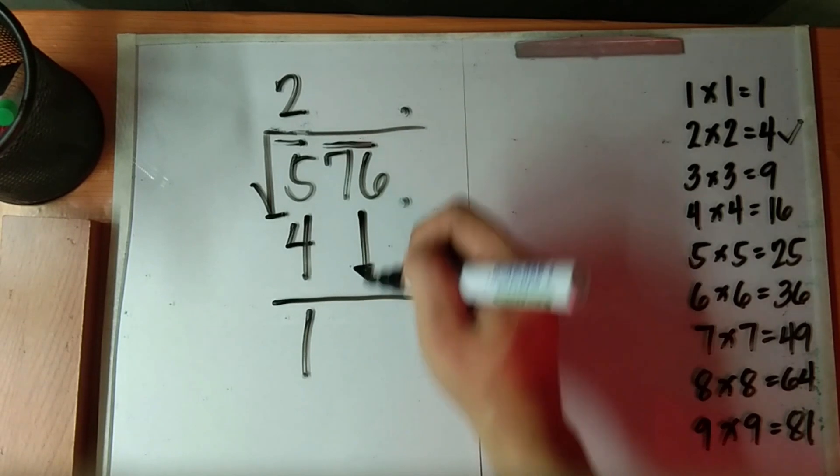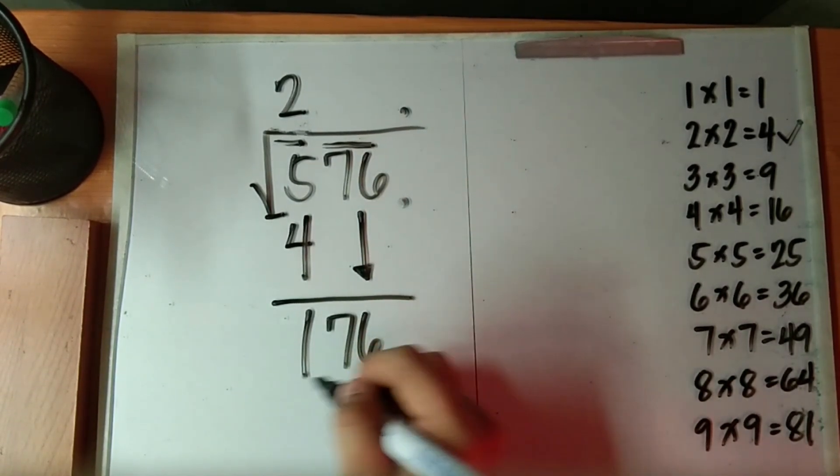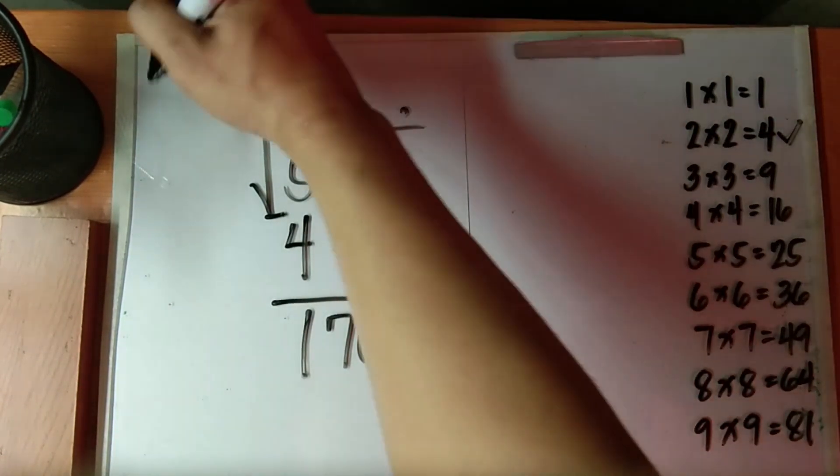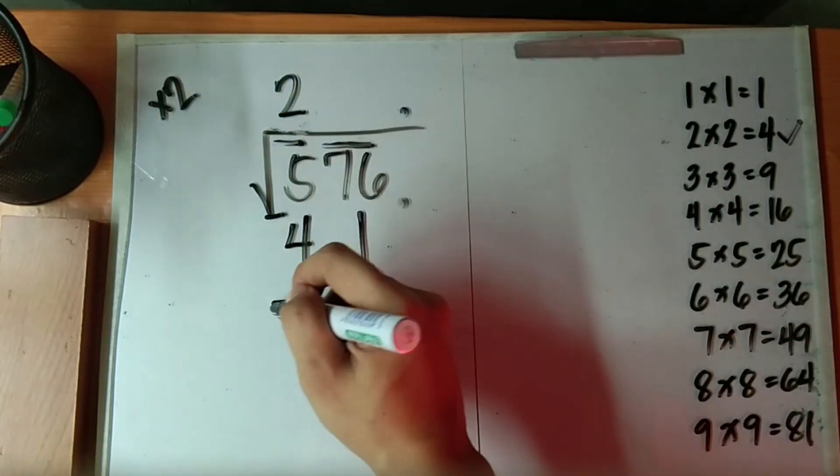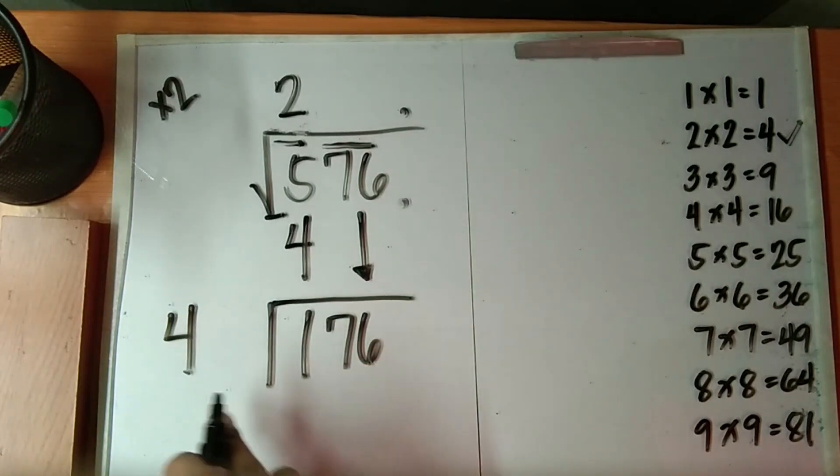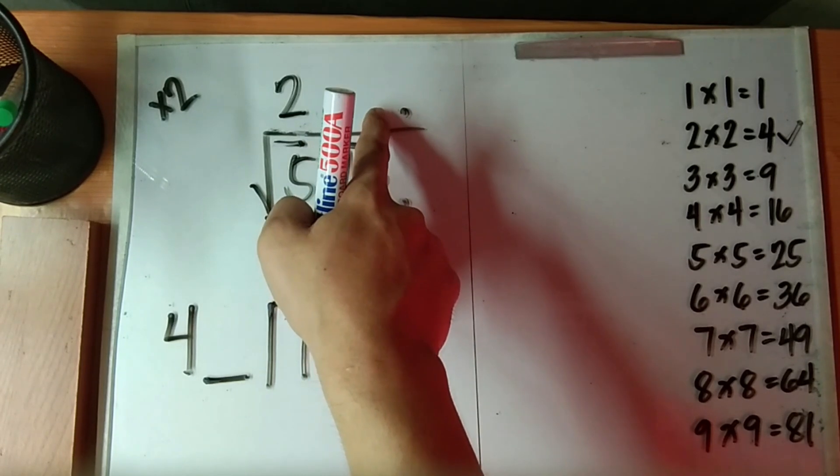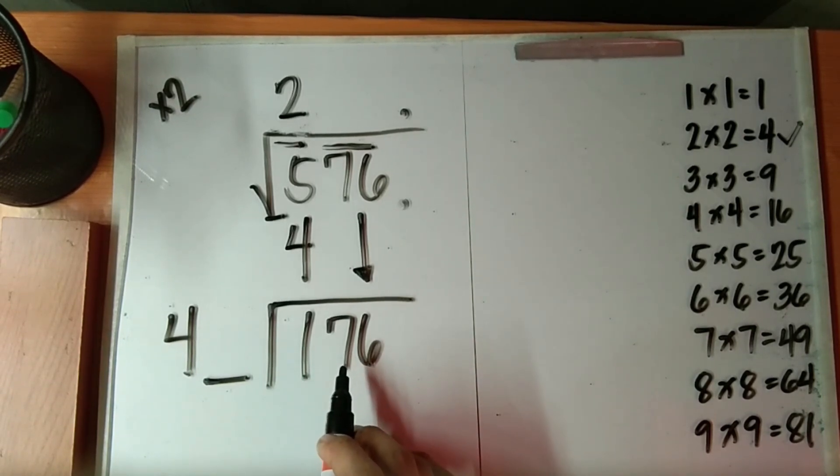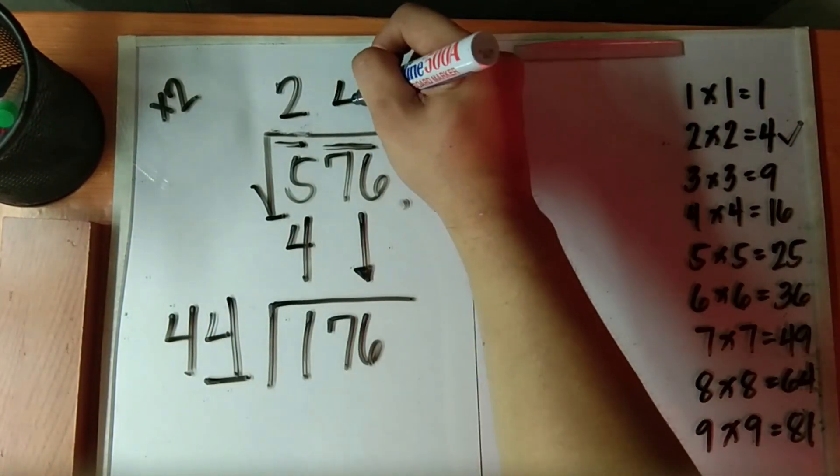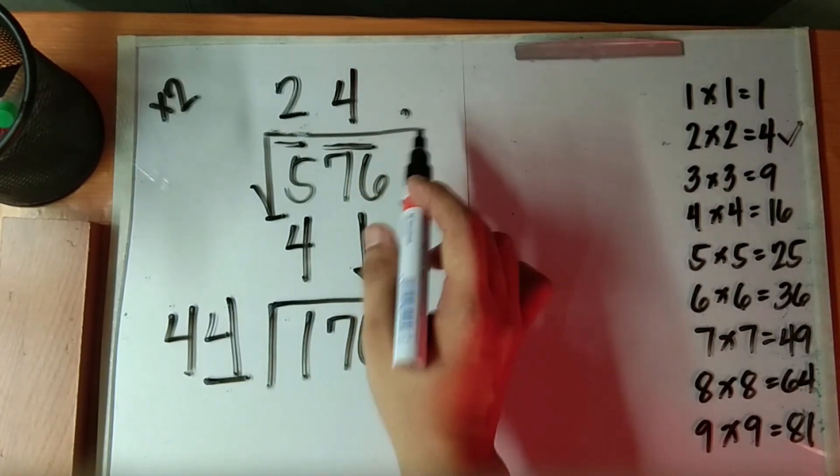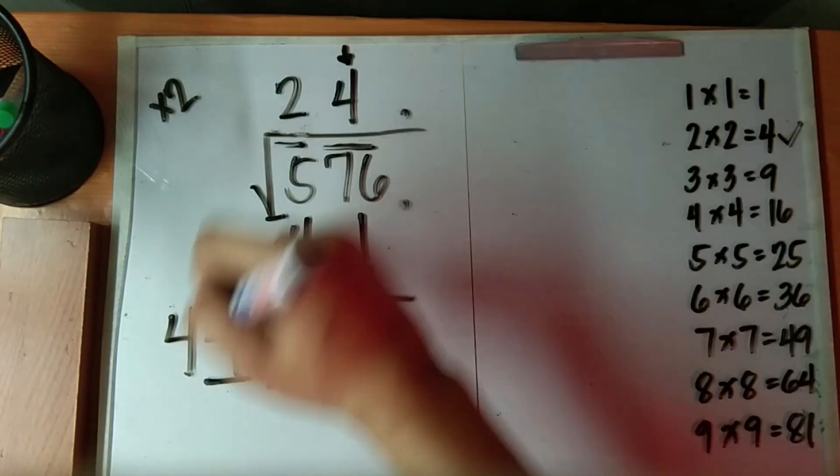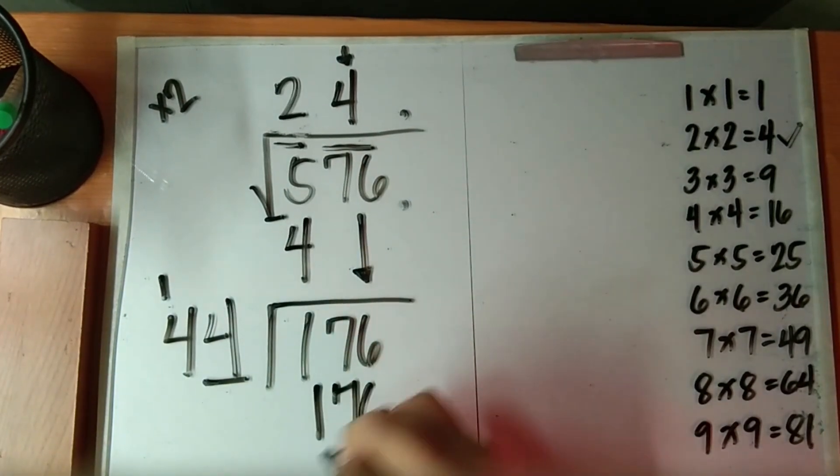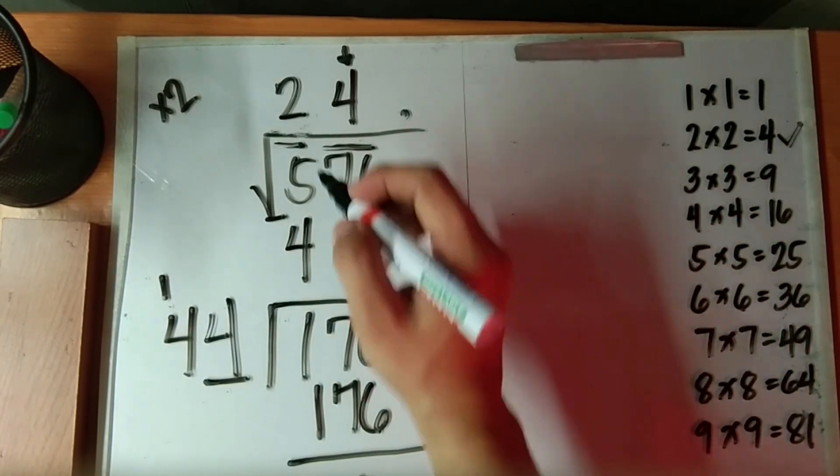Bring down the next pair, which is 76. We have 176 here. Now multiply the number above the radical sign by 2. Multiplying this value by 2 will have 4. Place it beside 176. This will be our divisor later. Now leave a blank for the units digit. Take note, the units digit of the answer here should be the same as the units digit of the divisor. Now question, how many 40 plus are there in 176? So by estimation, we have 4. Now multiply the units digit of the answer by the divisor, which is 44. 4 times 4.